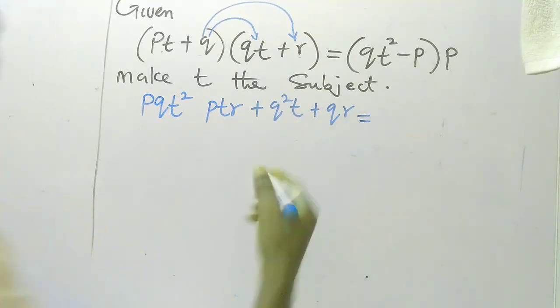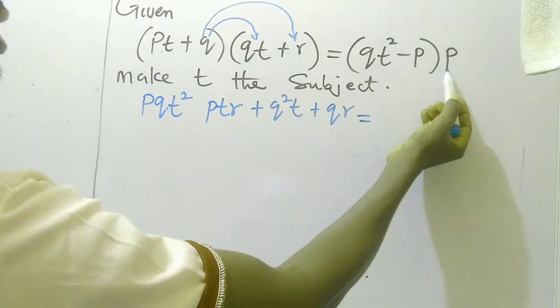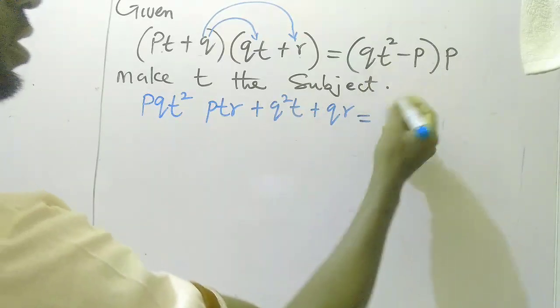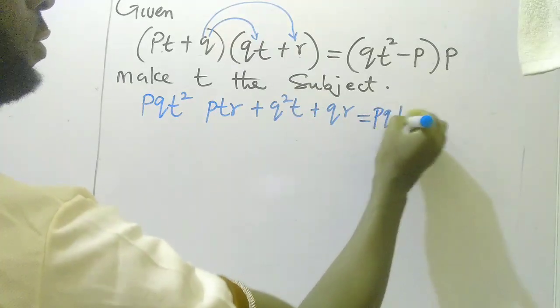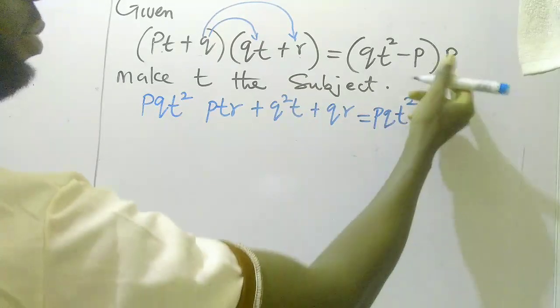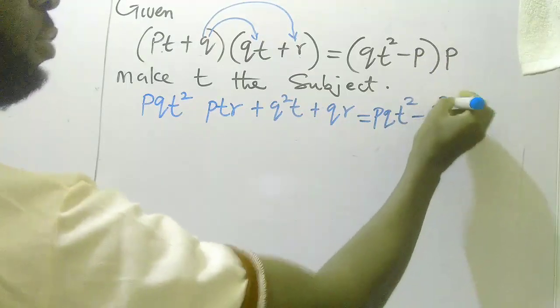Equal to, I expand this: p times qt that will give me pqt², p times p that gives me p².